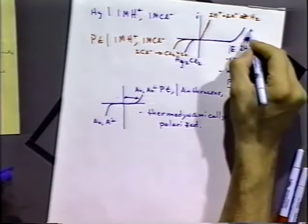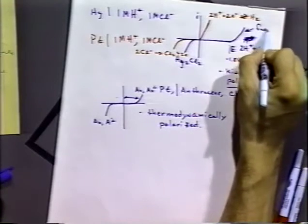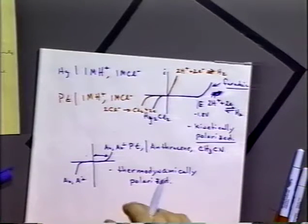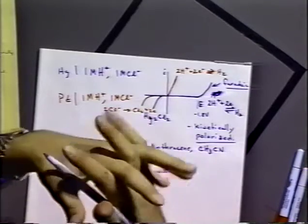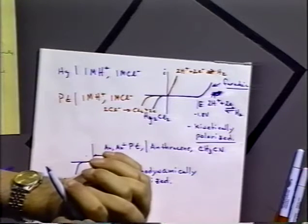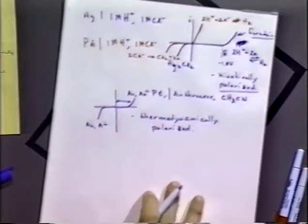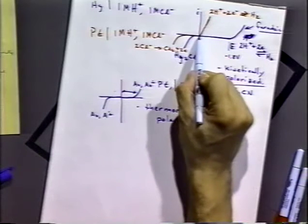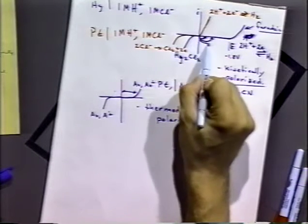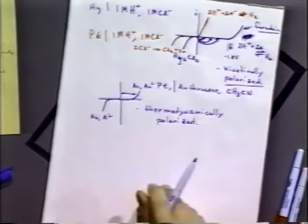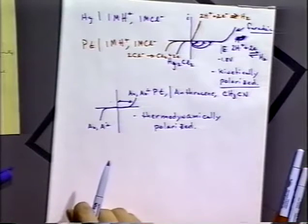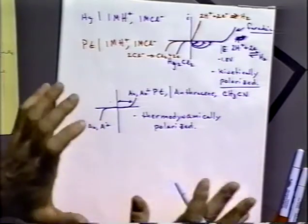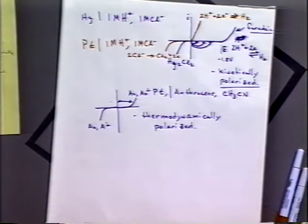The current flowing at these points is called faradaic current — named in honor of Michael Faraday, who first showed that the amount of current flowing is directly related to the amount of chemical reaction occurring. If we set the potential at any point within the range where no reaction occurs and wait a long time, we see no current flowing, or only very tiny amounts of current under those situations.